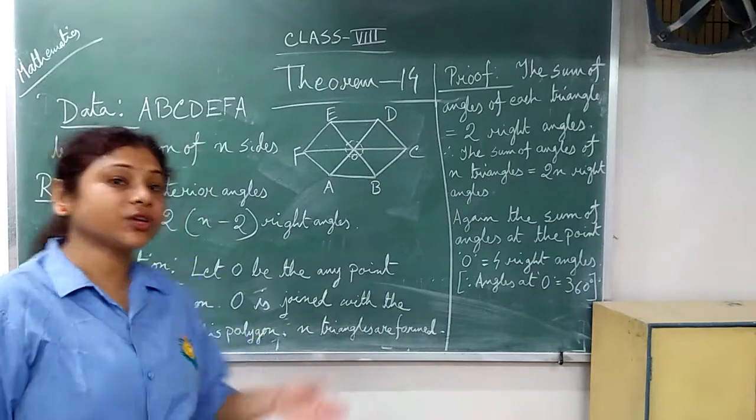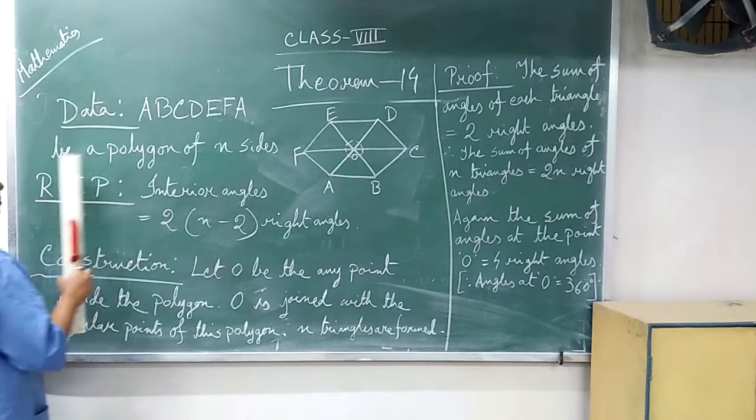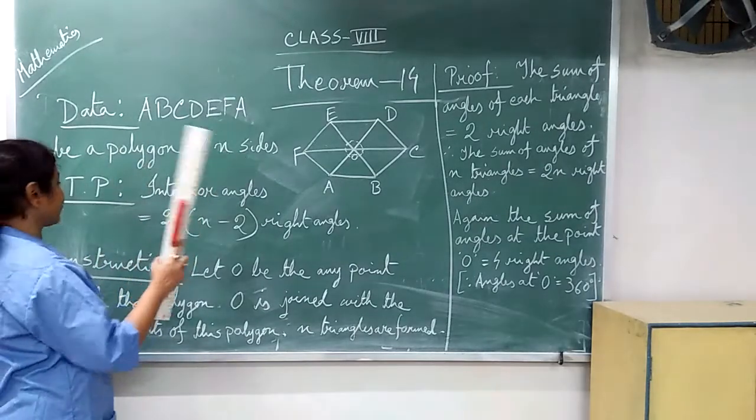Triangle is also a polygon. So here it will not mention the exact sides. ABCDEFA is a polygon of n sides.